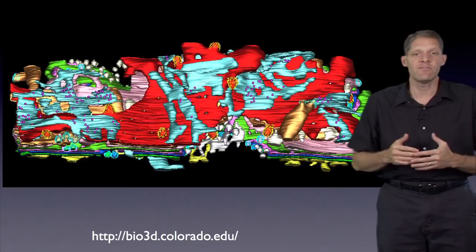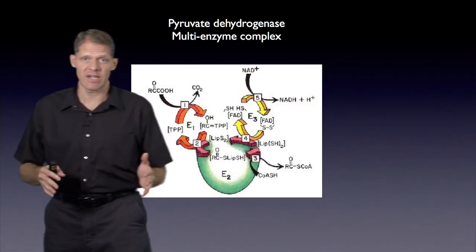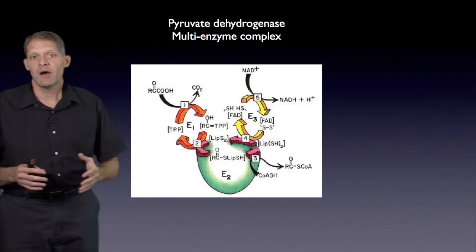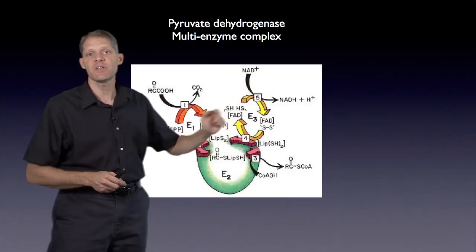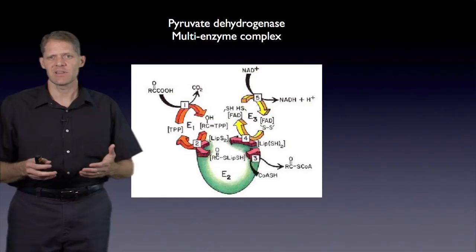Now for a very small object studied by tomography: the pyruvate dehydrogenase multi-enzyme complex (PDC). This is a rather large macromolecular complex containing three enzymes named E1, E2, and E3, which together catalyze five biochemical reactions. While the structures of E1, E2, and E3 were solved individually by X-ray crystallography, the architecture of the entire assembled complex remained unclear.